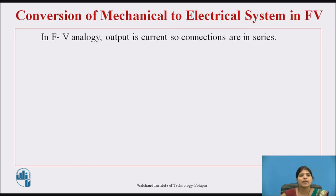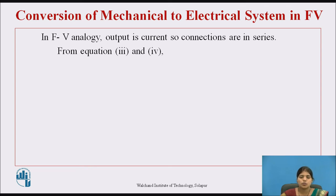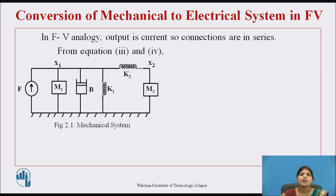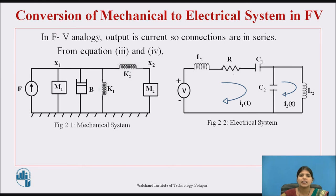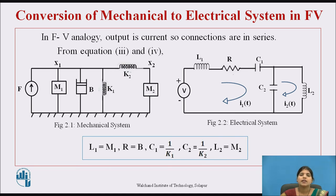Now we see the conversion of mechanical to electrical system in force voltage analogy. In FV analogy, the output is in terms of current, so connections are in series. From Equations 3 and 4 we can draw the circuit. Elements connected in parallel in the mechanical system get connected in series in the electrical system, and vice versa. L1 is equivalent to M1, R to B, C1 to 1/K1, C2 and L2 to M2.